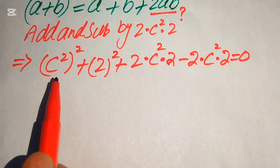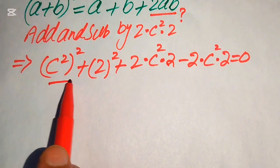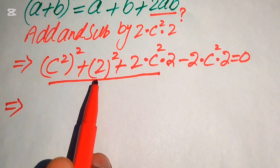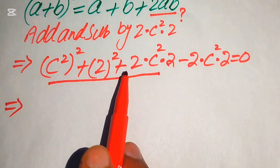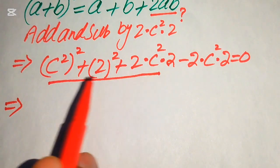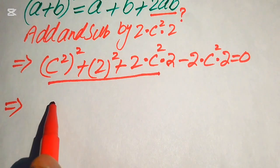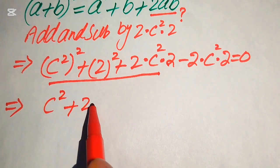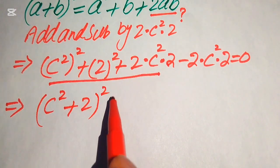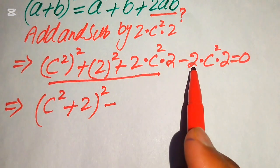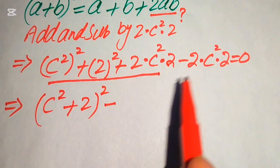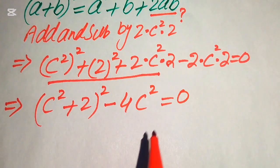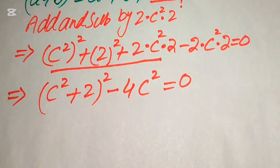In the next step we focus on the first three terms. We have a² + b² + 2ab, so when we combine all of these terms it is written as (c² + 2) whole squared, then minus 2 times 2 becomes 4 times c squared, and this equals 0.